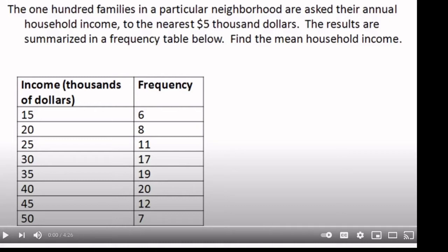It's convenient to summarize data as a frequency table. Here we've got a frequency table looking at income for households. Notice that the income is measured in thousands of dollars. So that first line says that there are some people that earned $15,000 a year, and that there are six households in the sample that earned that amount.